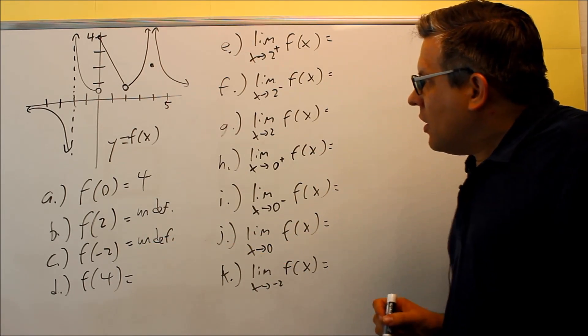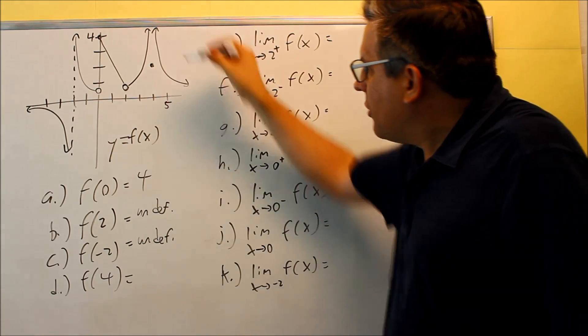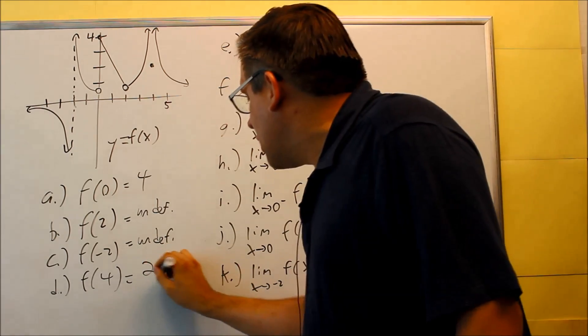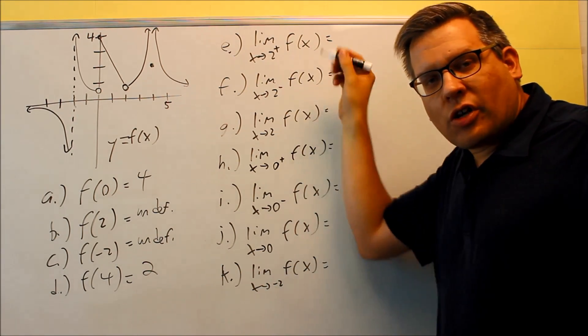f(4) - even though we have both of these going up forever to infinity, there is a closed circle there and that's what we're going to grab for our value. This is going to be equal to two. Now let's step over here and take a look at these limits.